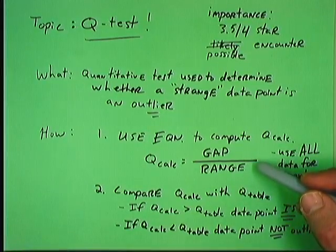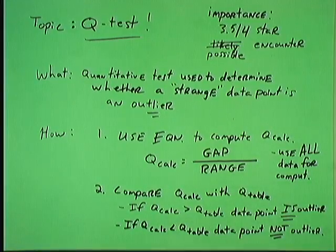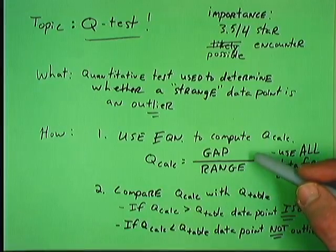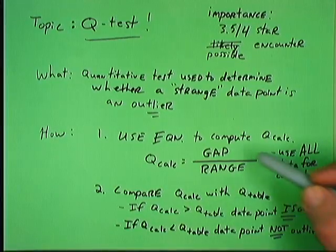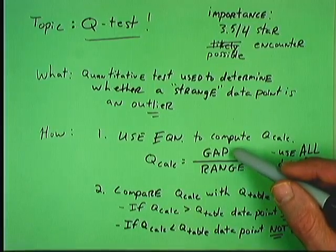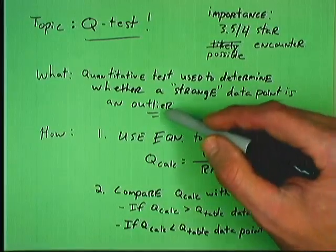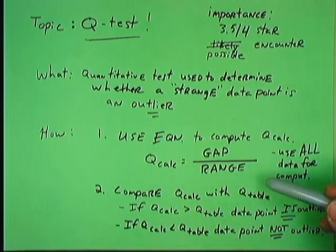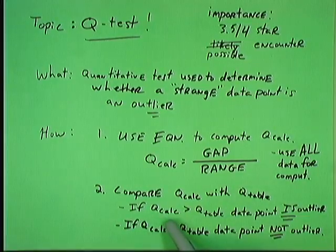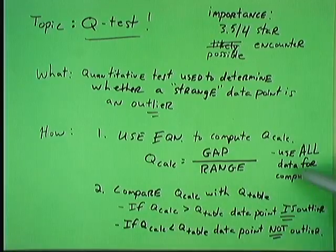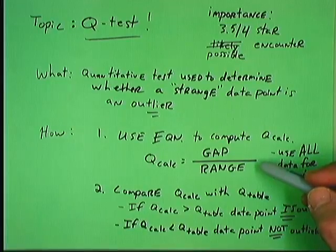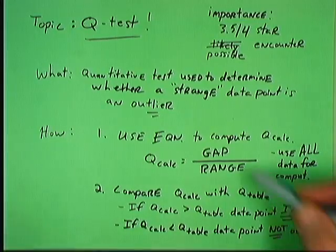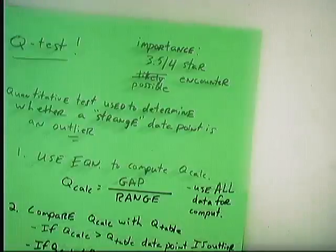Okay. Whenever you're looking at these equations, if you can't remember whether Q-Calc has to be bigger or smaller than Q-Table to throw out the data point or to have statistical significance, it always makes sense to think about the form of the equation to justify which one must be true. And as we'll see in a few minutes, the bigger the gap becomes, the more far away this outlier lies from the point. So it makes sense that if this becomes a big number, you should be more and more likely to justify throwing out the data point. So you can rationalize from that. If Q-Calc is bigger, we can throw it out. Okay. So this is the formula. Again, with all these statistical tests on your standardized exams, they don't give you the equations at all, basically. So consequently, you need to memorize the equations. And this one is a little bit easy to memorize just because of the form.